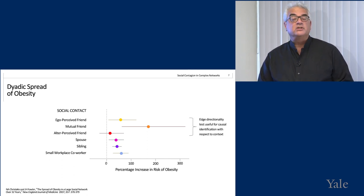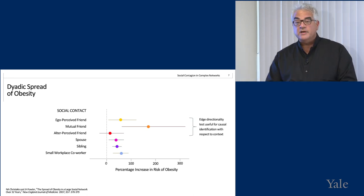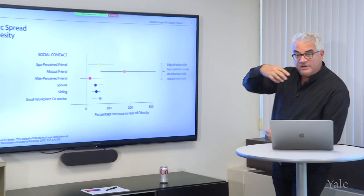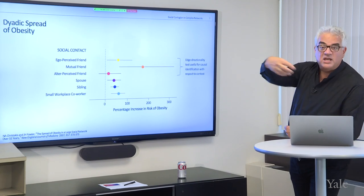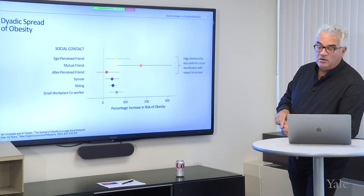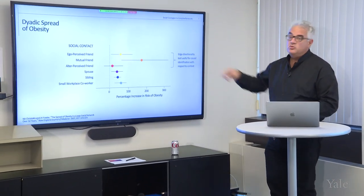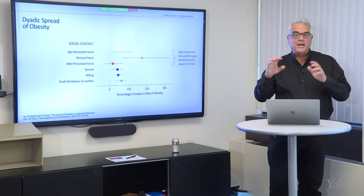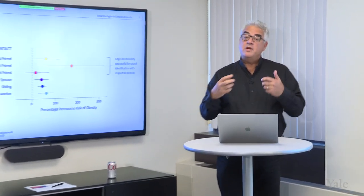One of our statistical approaches introduced in the 2007 paper reflected a novel identification strategy — what we called the edge directionality test, which was very helpful in understanding the role of context. Imagine an ego and an alter: I might say you are my friend — an ego-perceived friendship. You might reciprocate — a mutual friendship. Or you might say I am your friend, but I have no idea who you are — an alter-perceived friendship. We would expect that if you gained weight, you should have the biggest impact on me in a mutual friendship, second in an ego-perceived friendship, and least or not at all in an alter-perceived friendship. In an alter-perceived friendship, you're gaining weight but I might have no idea who you are — you should have no influence on me. This is very helpful because if there were some contextual factor making us both gain weight, it shouldn't respect these social relationships.